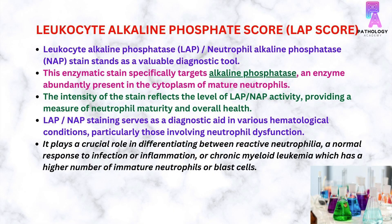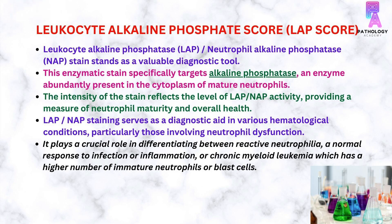Leucocyte Alkaline Phosphatase score is also known as Neutrophil Alkaline Phosphatase score. In this, the enzymatic stain specifically targets Alkaline Phosphatase, an enzyme which is abundantly present in the cytoplasm of the neutrophils. The intensity of the stain reflects the level of LAP or NAP activity, providing a measure of neutrophil activity and overall health.